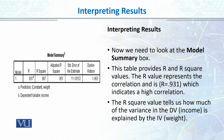Now moving on to the main model. We have this model summary table. In this table, R is the simple correlation between the independent and dependent variable, and R-square is the variance explained — that is, how much percent of variance in the dependent variable is explained by the independent variable. Here it is 0.86, which is very high.